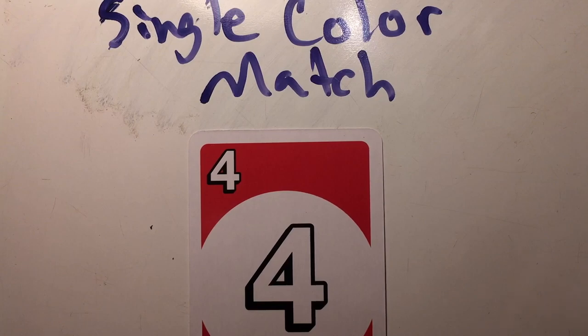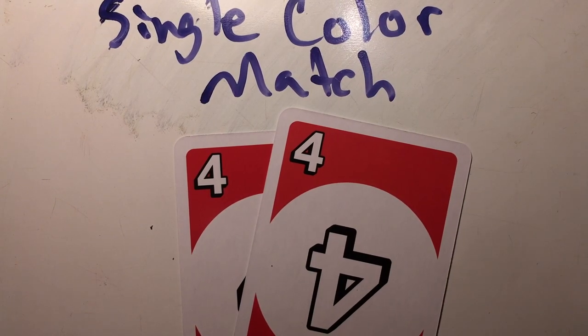To single color match, place any one card from your hand on a center row card with the same number and color. Now when your turn ends, you may place one of your hand cards into the center row.